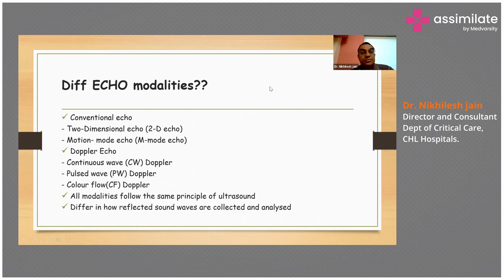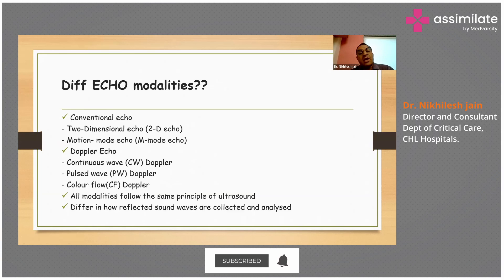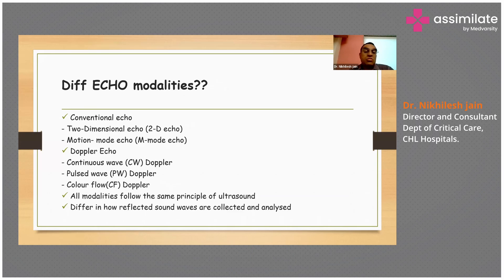There are different eco-modalities. One is a conventional echo, which is a two-dimensional echo or 2D echo, and they have a motion mode echo which is M mode echo. Then you have a Doppler echo, which is subdivided into continuous wave Doppler (CW Doppler), pulse wave Doppler (PW Doppler), and colour flow Doppler (CF Doppler). All modalities follow the same principle of ultrasound and differ in how reflected sound waves are collected and analysed.